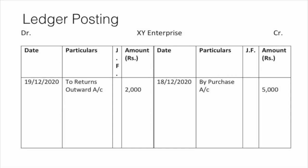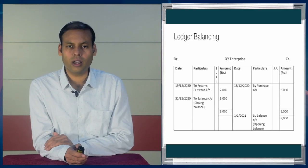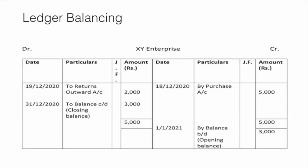Now it is time to balance the ledger. If we see, which side is heavier — it clearly gives us the indication that the credit side is heavier. On the credit side the amount is 5000, meaning we purchased goods for Rs. 5000 on credit, and we returned goods worth Rs. 2000 to XY Enterprise. So the credit side amount column is heavier, and from that we deduct the debit side amount. The resultant balancing figure will be 3000, and it will be recorded on the lesser side, i.e., the debit side, written against Balance c/d.